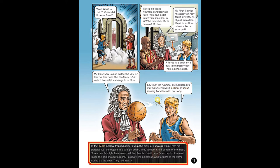In the 1600s, Galileo dropped objects from the mast of a moving ship. From his perspective, the objects fell straight down and landed at the bottom of the mast. Some people might have assumed the objects would have fallen behind the mast since the ship moved forward. However, the objects moved forward at the same speed as the ship — they had inertia.